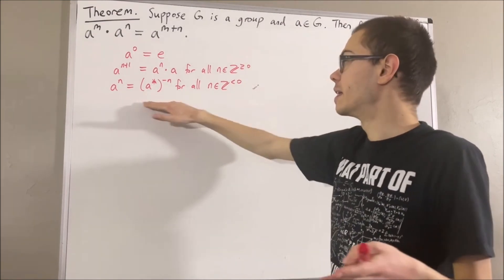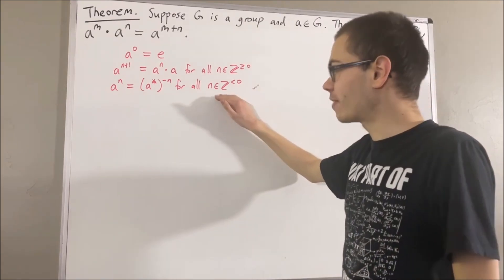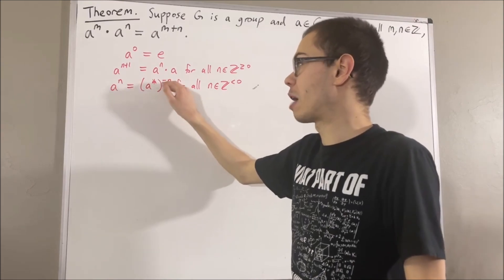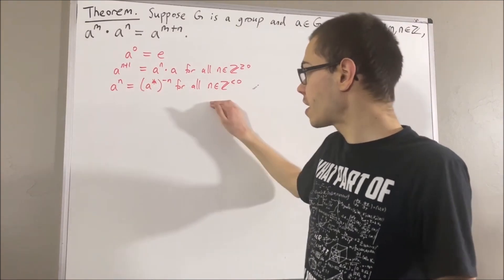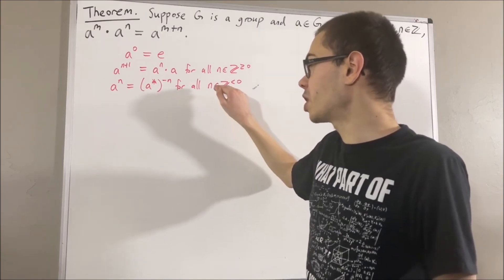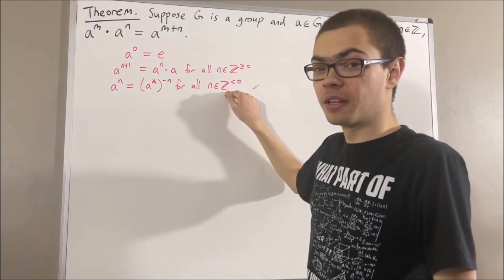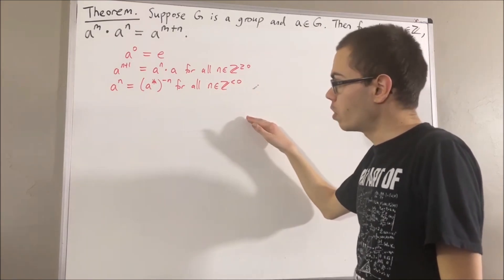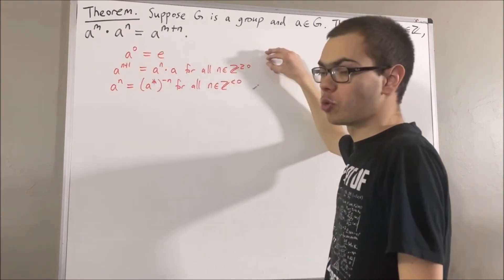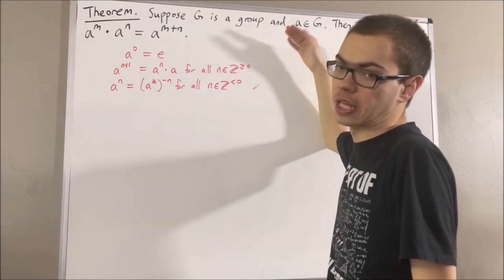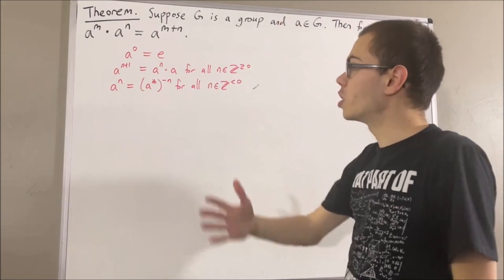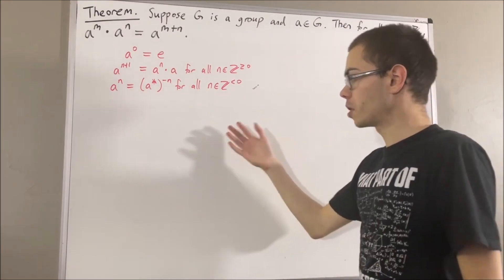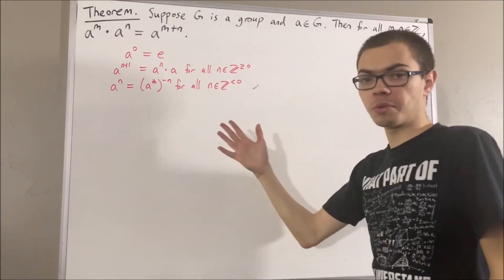As for negative integers, given any negative integer N, A to the N is equal to the inverse of A to the power of negative N. This definition makes sense, because if we consider any negative integer N, then negative N is a positive integer. And we've described in the first two lines how to take any group element and raise it to the power of a positive integer. So in particular, we know how to raise the inverse of A to the power of the positive integer negative N. So this definition for negative integer exponents makes sense.